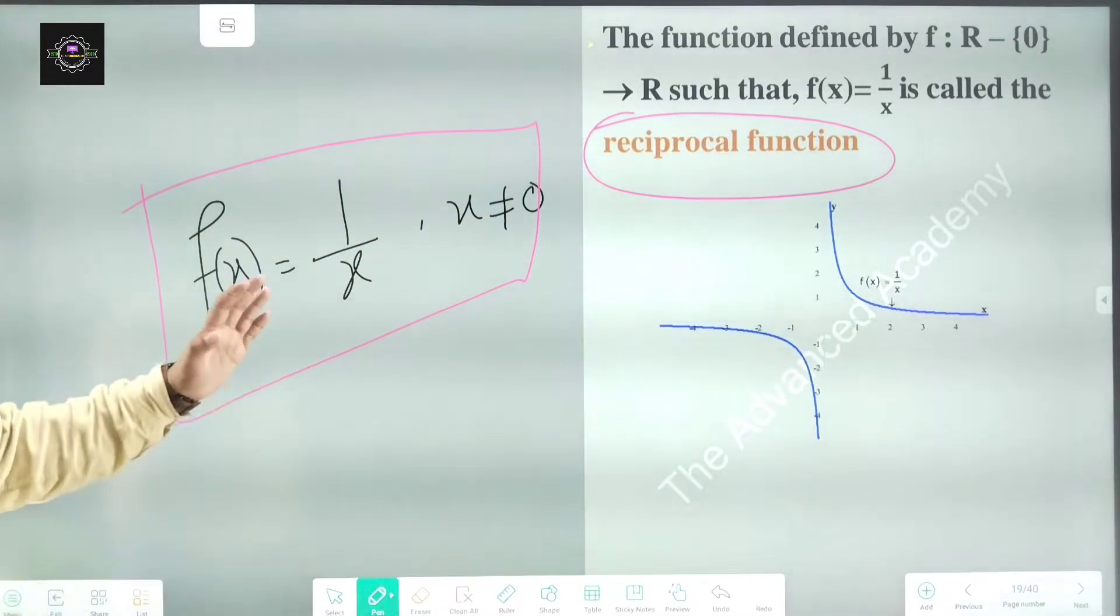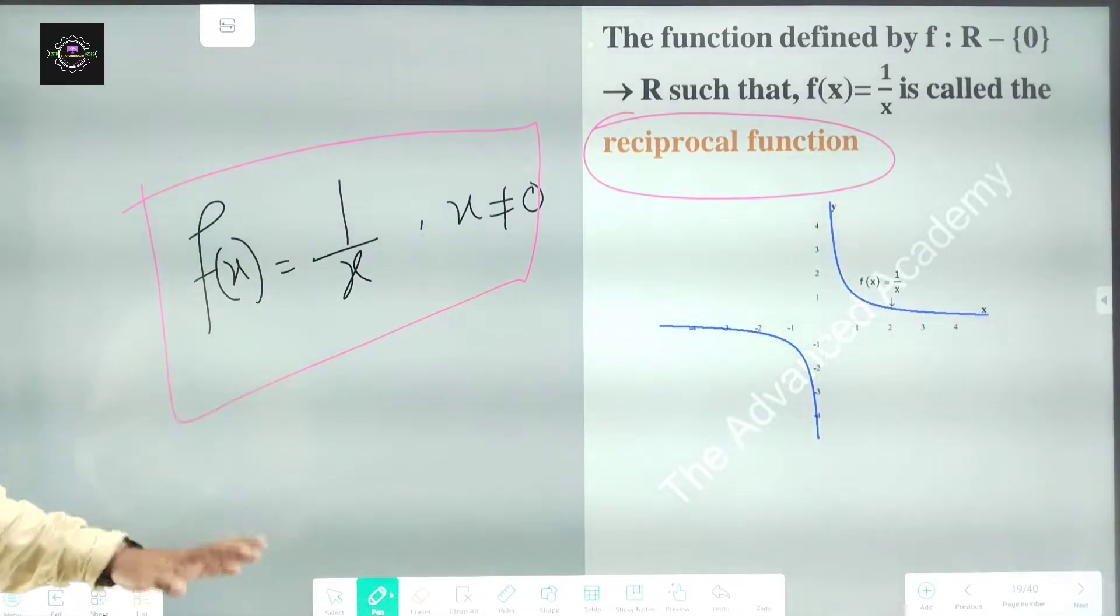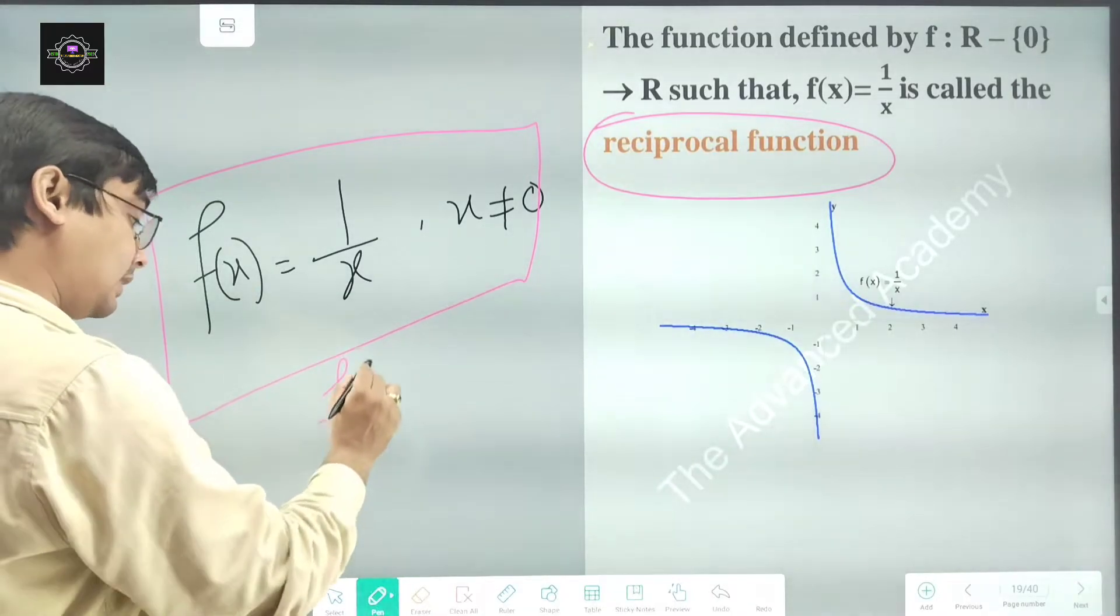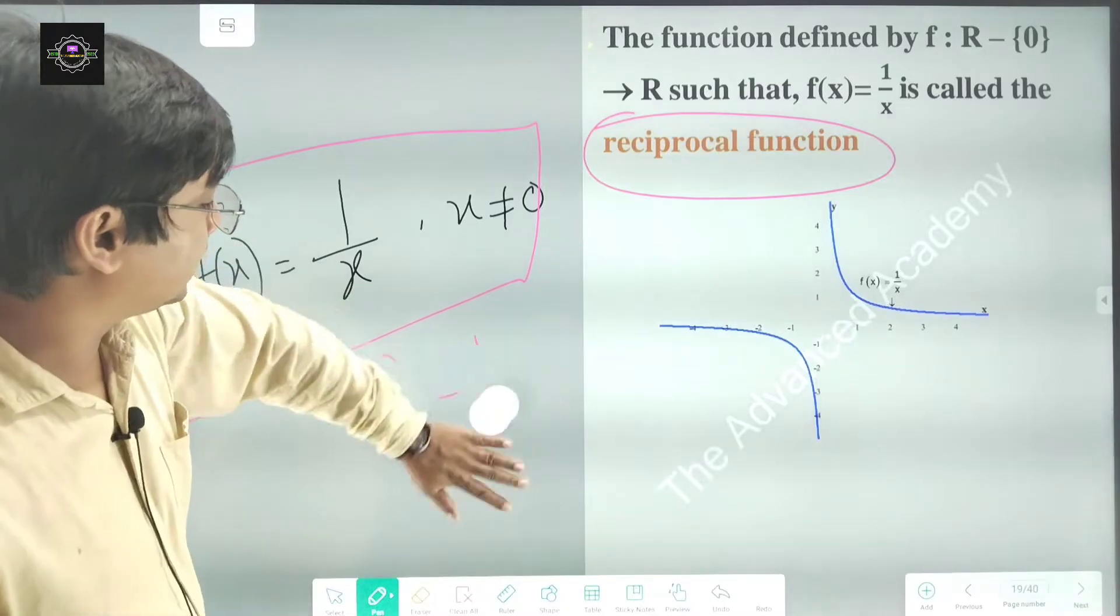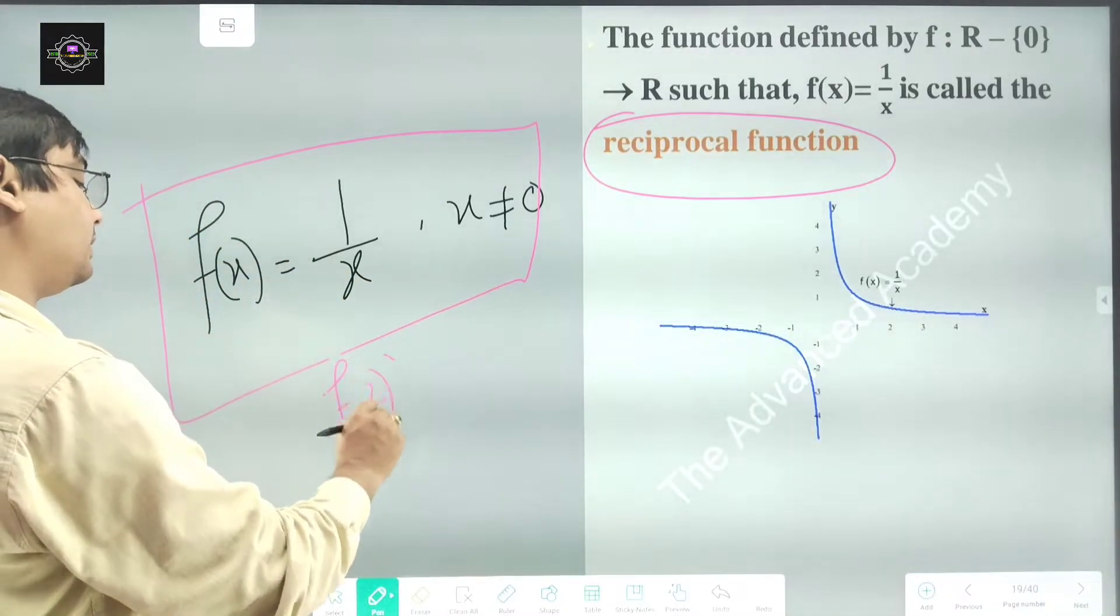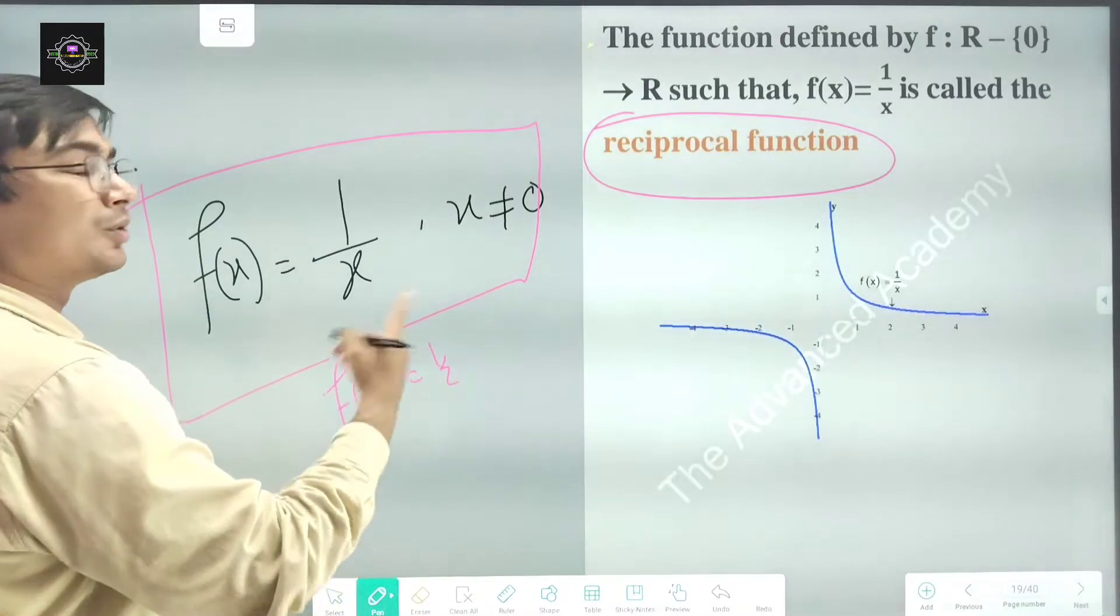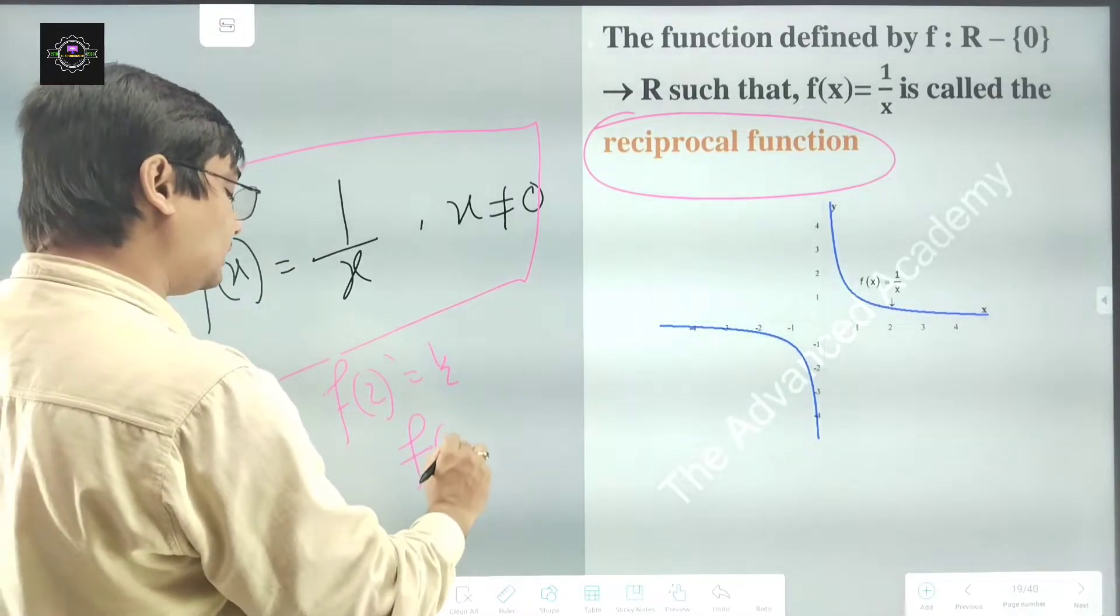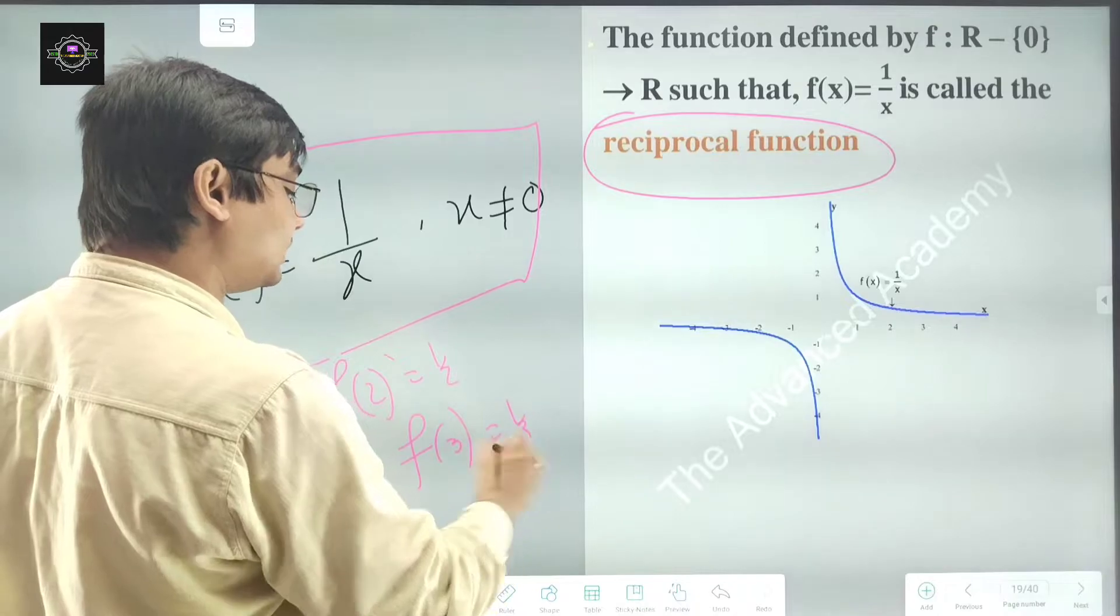This type of function is called the reciprocal function. For example, if we put in place of x equal to 2, then the function will give here 1 by 2. If we put here 3, it will give here 1 by 3.